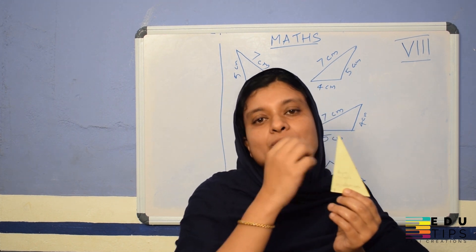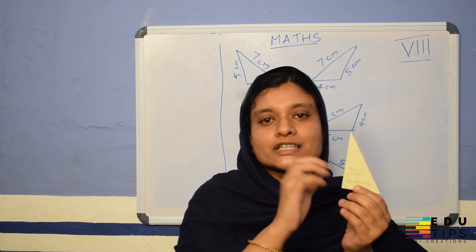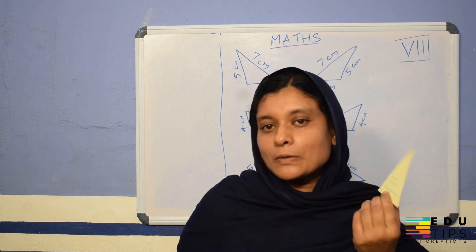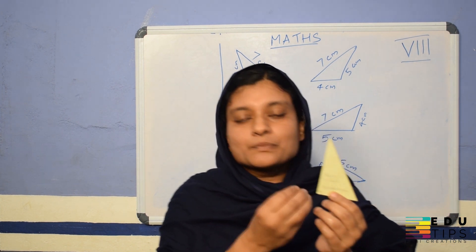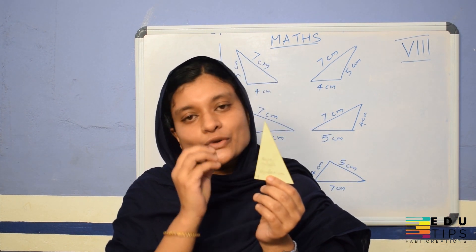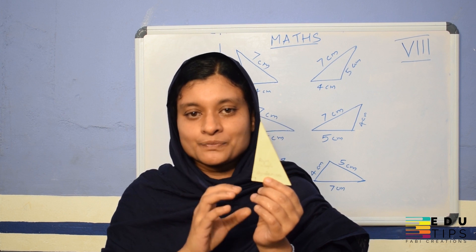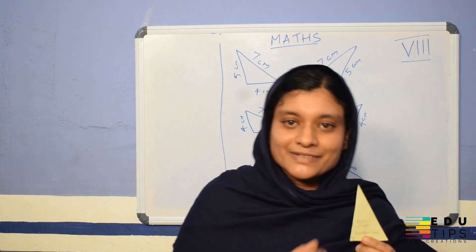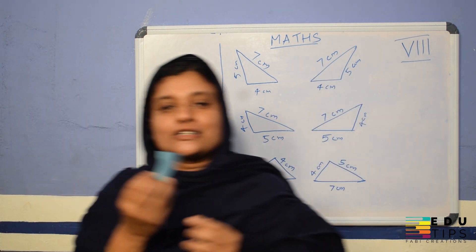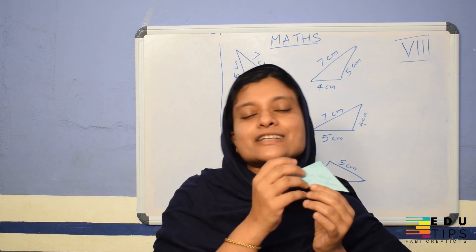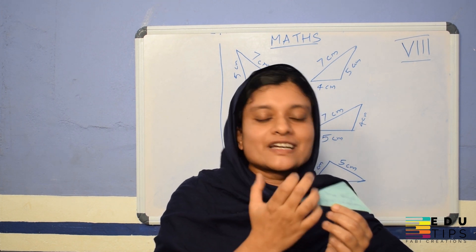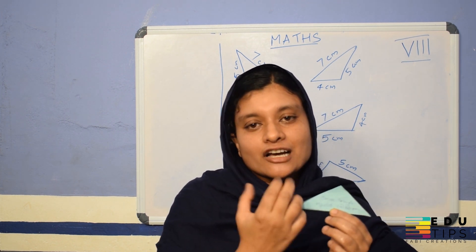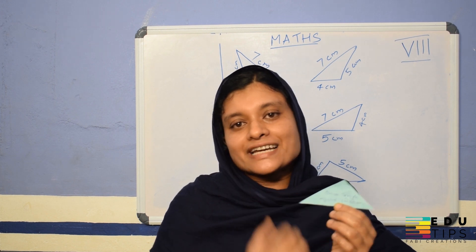The sum of the angles of a triangle is 180 degrees. If you have one angle of 90 degrees, the remaining angles must add up to 90 degrees. So a triangle cannot have two right angles. A triangle with one angle greater than 90 degrees is called an obtuse triangle.